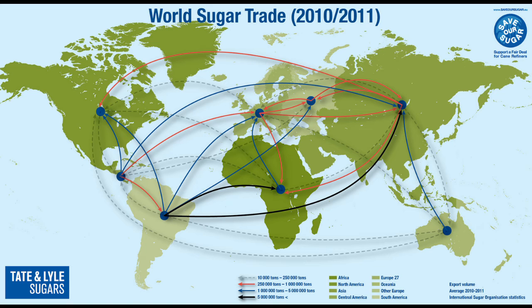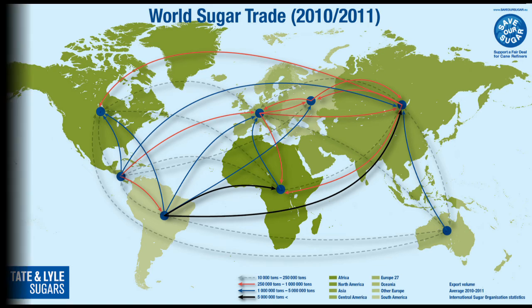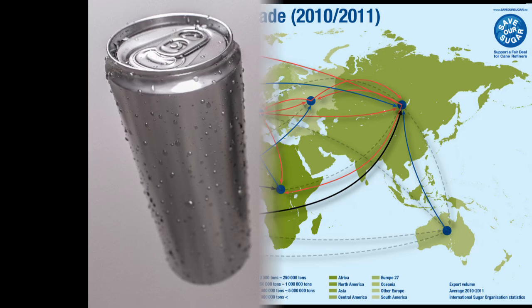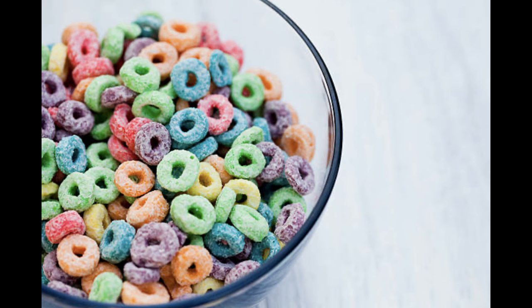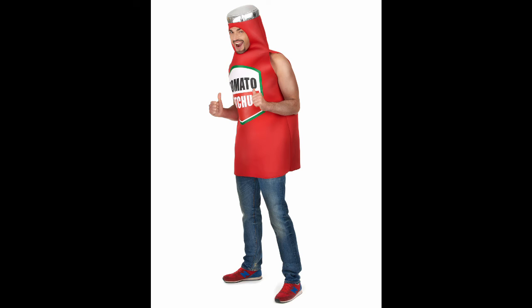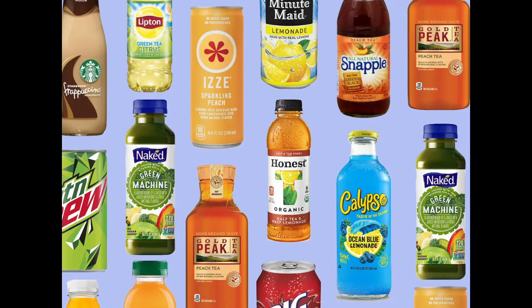So with that being said, how should we try and reduce our added sugar consumption? Some helpful tips to reduce your sugar consumption are to particularly avoid drinking sodas, flavoured cereals, condiments such as ketchup or mustard, and unnatural fruit juices. These contain high amounts of sugar and can be avoided easily.